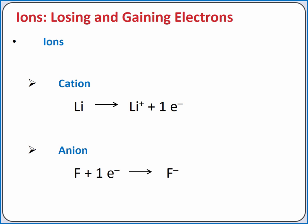If we add electrons to a neutral atom, it becomes a negatively charged ion, which is called an anion.